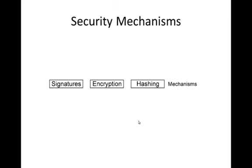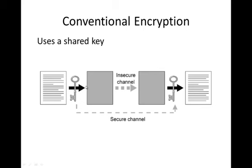Looking at the diagram here: using the public key for encryption, a person encrypts a message using a shared public key and sends it to the other party. The other party decrypts the message using the same key and reads it. This provides confidentiality, but it does not provide integrity because anyone in the middle can alter or modify the data.